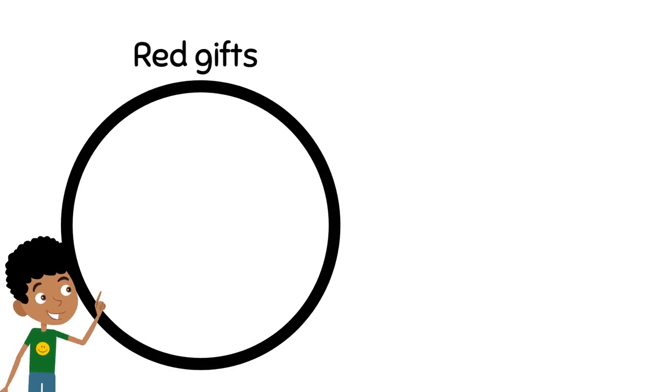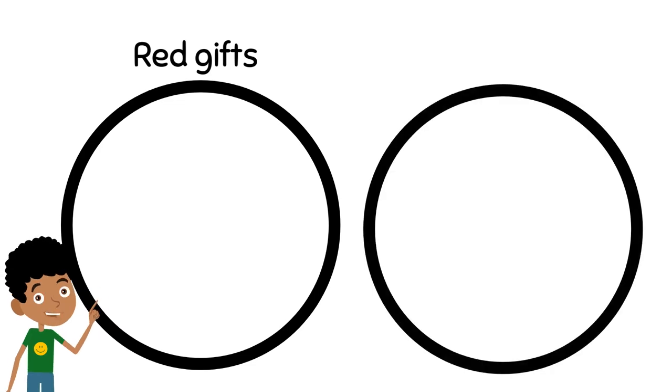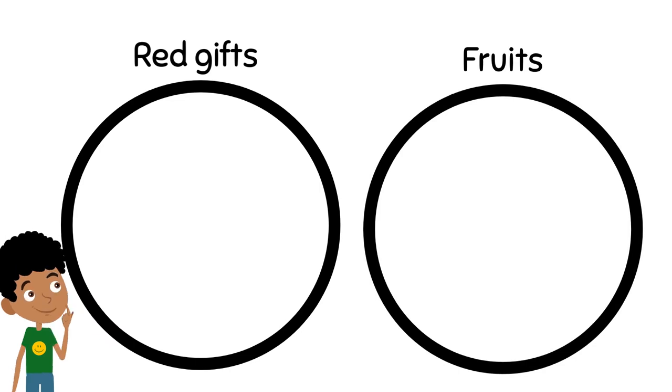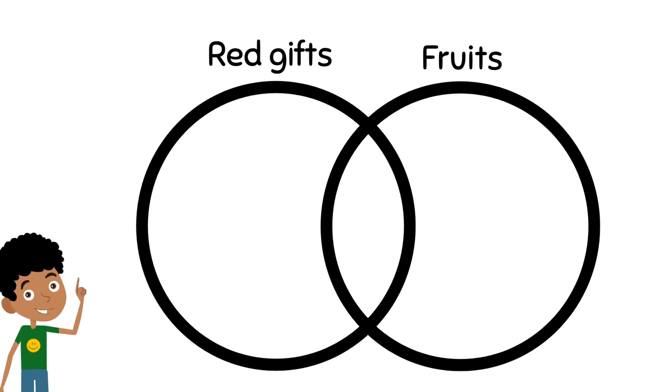He drew a circle to represent all the red gifts and another circle to represent all the fruits. Hmm, but he remembered that some of the fruits are also red. So he made sure that the two circles have an overlapping part.